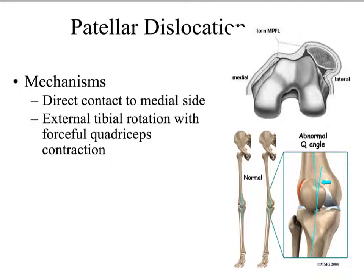On the traumatic side of patellofemoral instability, the first pathology to discuss is a patellar dislocation. In 90% of cases, the patella dislocates laterally, stretching all of the medial restraints. The typical mechanism of injury is direct contact to the medial aspect of the knee — specifically the medial border of the patella — causing the patella to sublux laterally, stretching the medial restraints, specifically the medial patellofemoral ligament, and potentially the synovial plica as well.